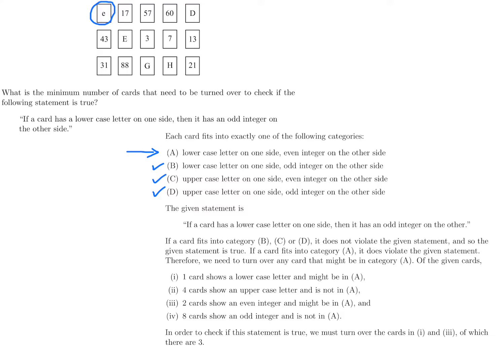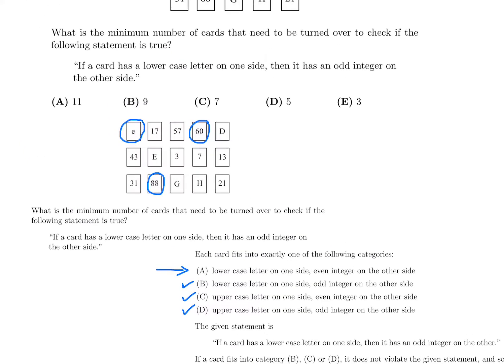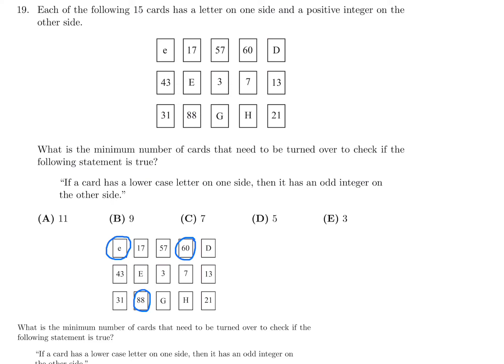How many lowercase letters are there and how many even numbers are there? Lowercase looks like there's just that one guy. So if we flip it over, if it's even on the other side, that would violate this. So we definitely need to flip over that one. That's the only lowercase. Now, we're looking at even integers. Even integers, if I flip it over and there's a lowercase on the other side, then that would also violate my statement. Which cards are even? This one is even and this one is even. Interestingly, only those three need to be flipped in order to check if this statement is true. That would mean number 19, the answer is E.